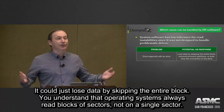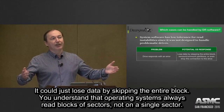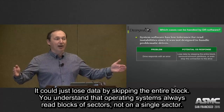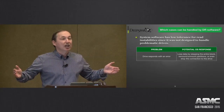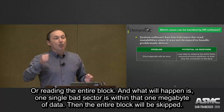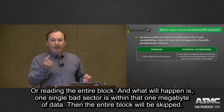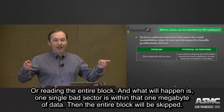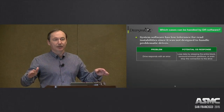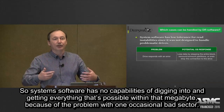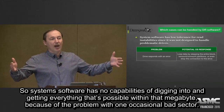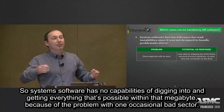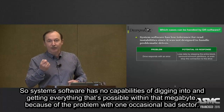The operating system could just lose data by skipping the entire block, because the OS always reads by blocks of sectors — not a single sector, but usually sequential data. It could be like a megabyte of data reading the entire block. If just one single bad sector is within that one megabyte of data, the entire block will be skipped. System software has no capability of digging in and getting everything that is possible within that megabyte because of the problem with one occasional bad sector.